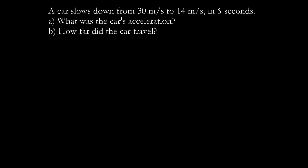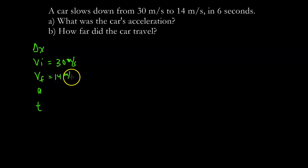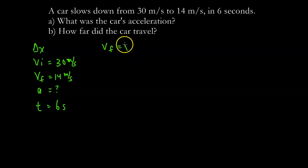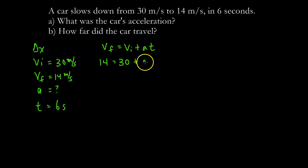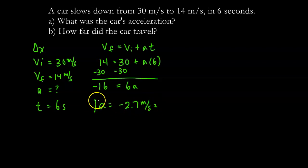Now I want to show you that using kinematic equations gives the same answer. Starting with the variables: initial velocity is 30 m/s, final velocity is 14 m/s, time is 6 seconds. Using VF = VI + AT: 14 equals 30 plus A times 6. Subtracting 30: negative 16 equals 6A, so A equals negative 2.7 meters per second squared — the same answer as the graph.